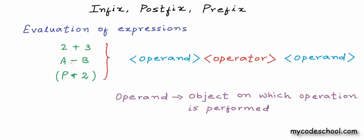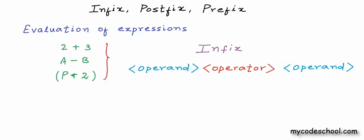In the next expression, a and b are operands and minus is the operator. In the third expression, the asterisk is for multiplication, so this is the operator. The first operand p is a variable and the second operand 2 is a constant. This is the most common way of writing an expression, but this is not the only way. This way of writing an expression — with the operator placed in between operands — is called infix notation.